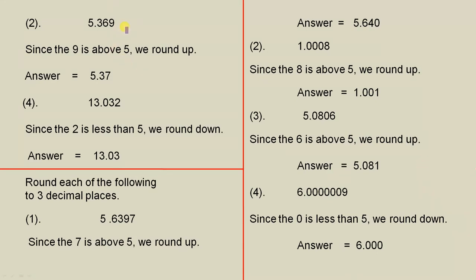We have 5.369. So again, if you remember, to two decimal places. So we're looking at those two digits. That 9 is above 5, so we round up. That 6 becomes a 7, so it's 5.37.